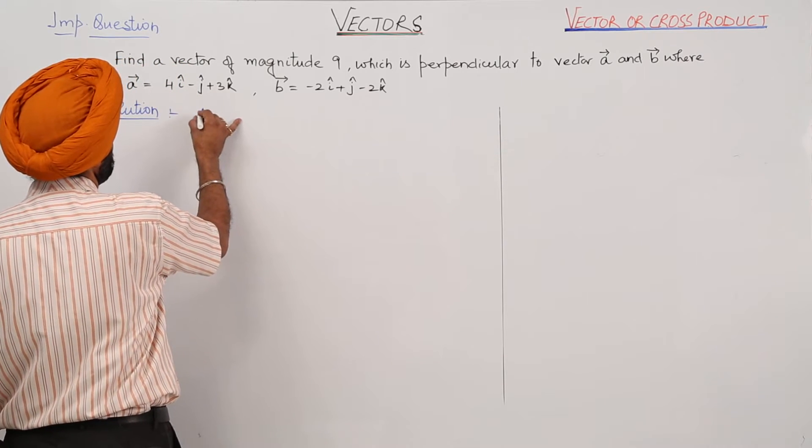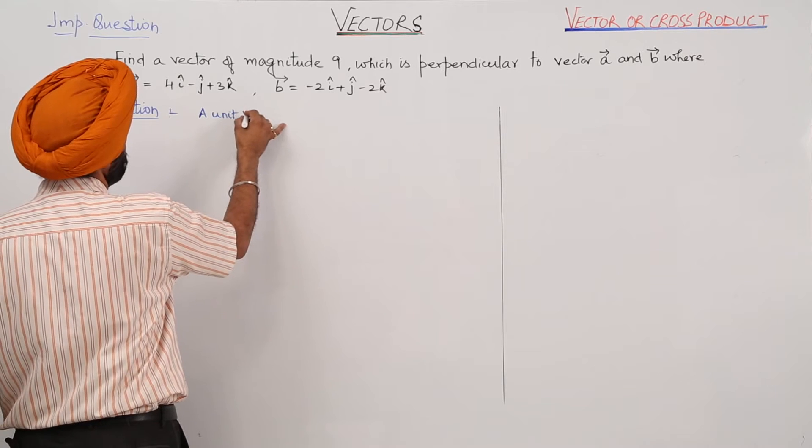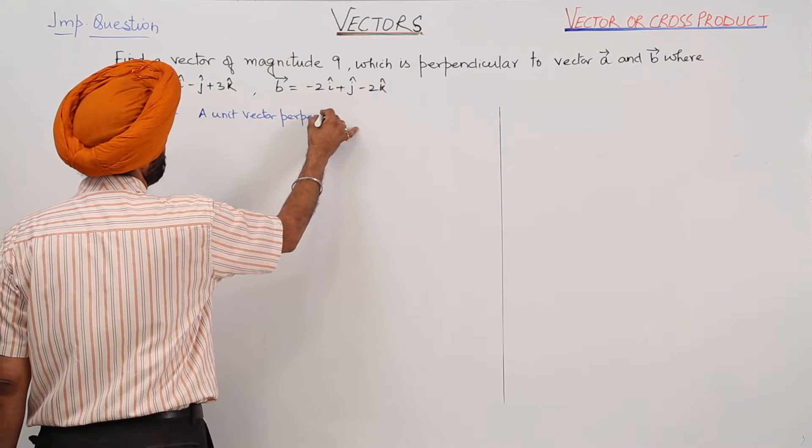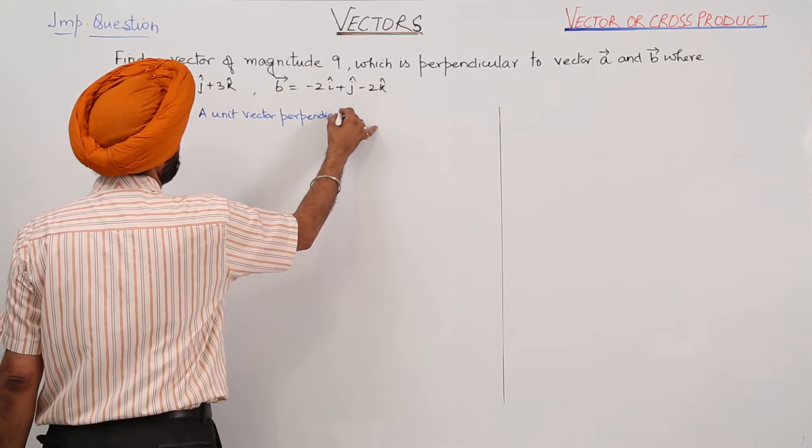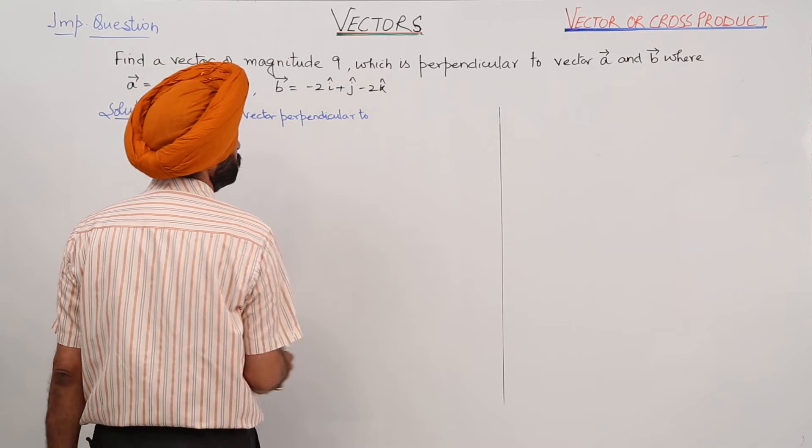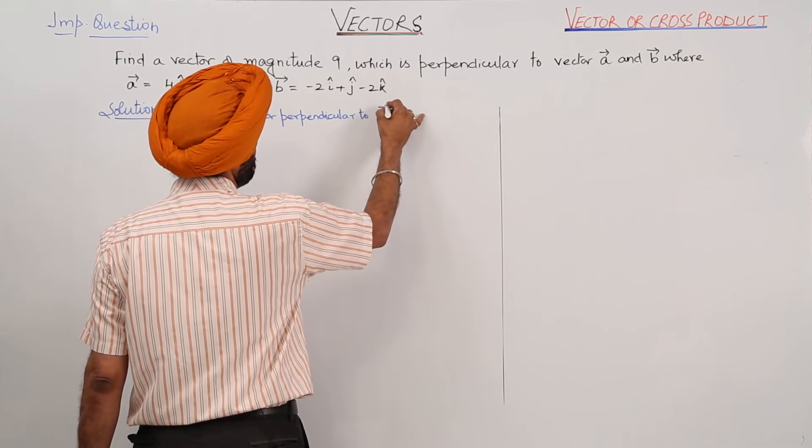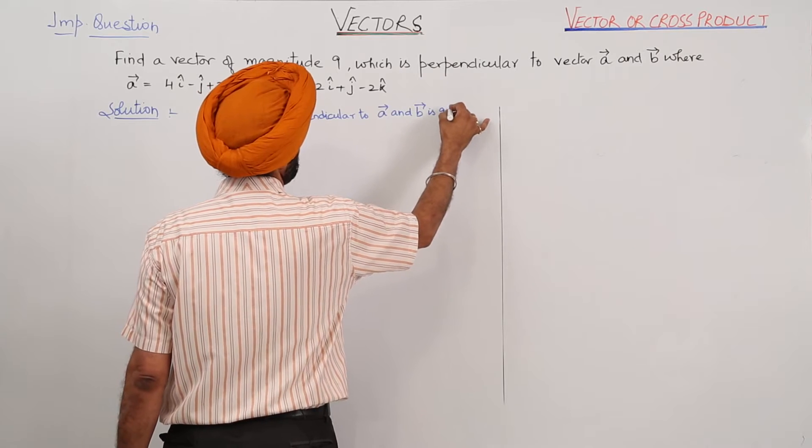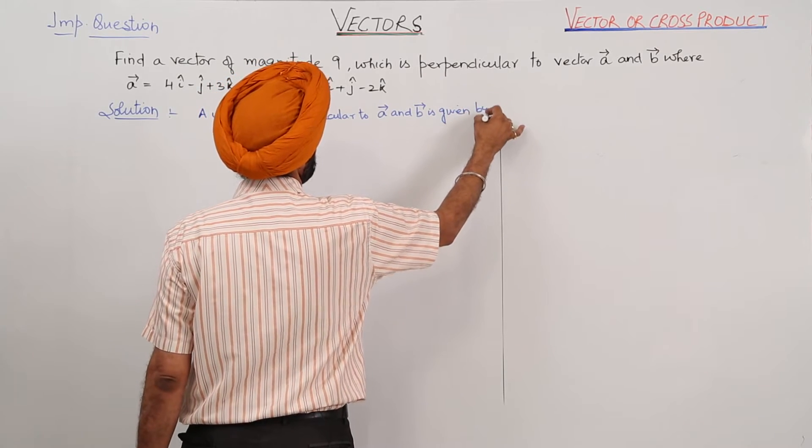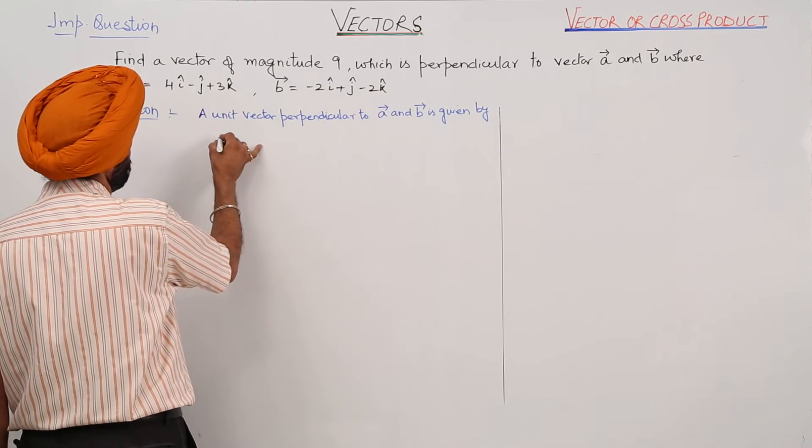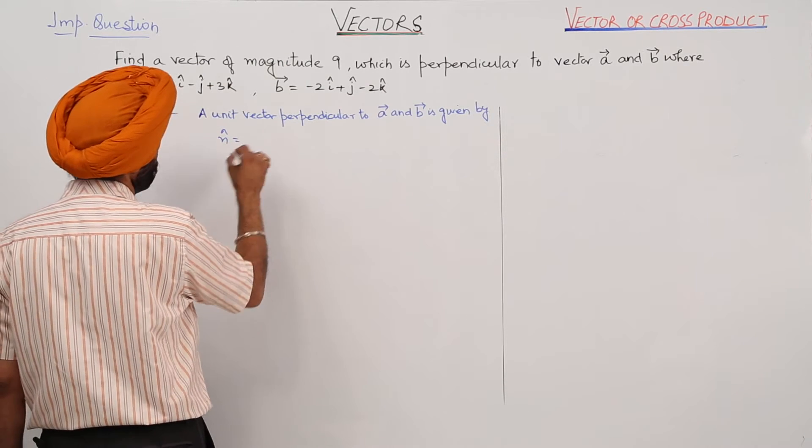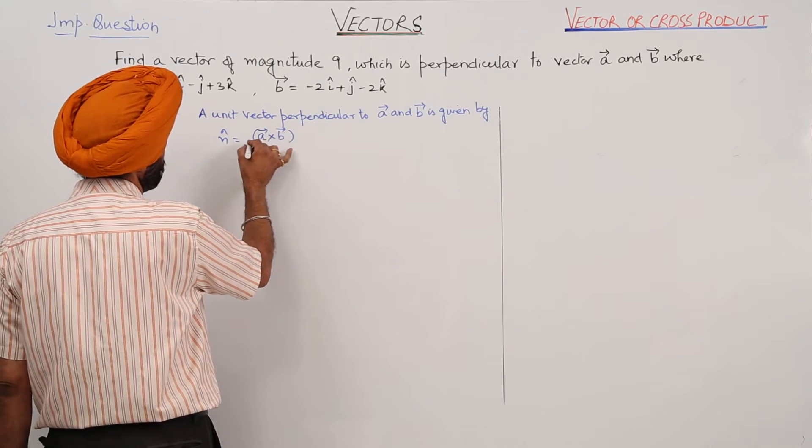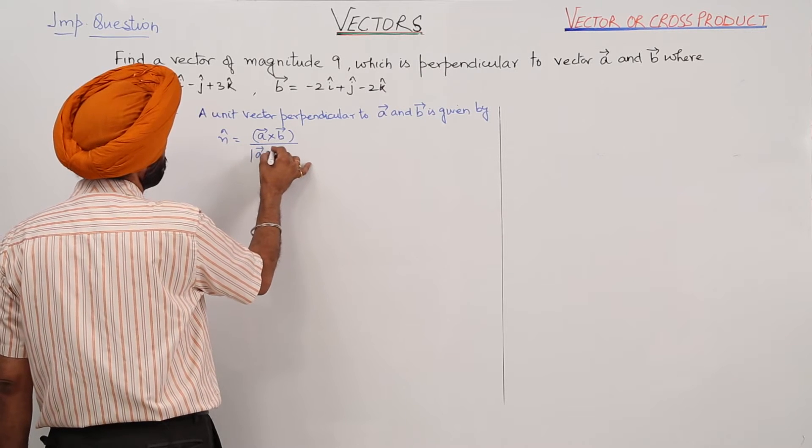A unit vector perpendicular to vectors A and B is given by vector N equals the cross product of vectors A and B divided by the magnitude of the cross product.